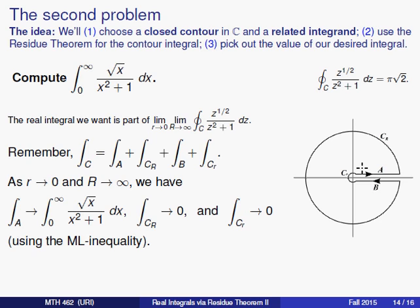Now as often happens with these problems, as little r approaches zero the integral around C sub r will also approach zero, and as big R approaches infinity the integral on that circle will also approach zero as well. Now each of these we're not going to get into the details but you can argue that that is the case using the ML inequality.